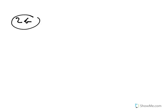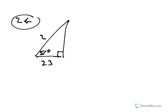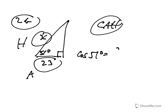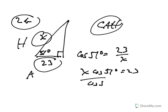Question 2b was a similar question. There's a 51-degree angle, 23 is the adjacent side, and they want the hypotenuse. Since we're dealing with the adjacent and hypotenuse, we use cosine: cosine 51 = 23 over x. Usually you say x · cosine 51 = 23 and divide both sides by cosine 51.